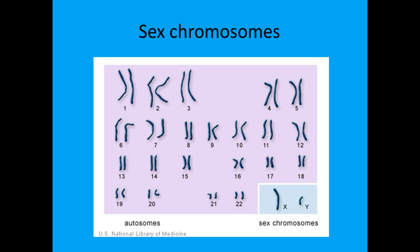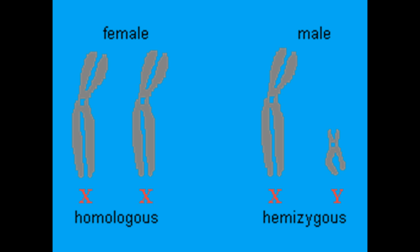Our genetic blueprint has 23 pairs of chromosomes. On the 23rd pair, males have an XY combination and females have an XX combination. One way of remembering that males have an XY combination is to remember that males wear Y-fronts.